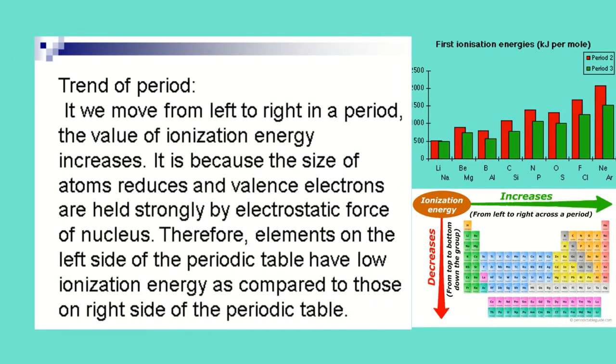If we move from left to right in a period, the value of ionization energy increases. It is because the size of atoms reduces. Therefore, elements on the left side of the periodic table have low ionization energy as compared to those on the right side.